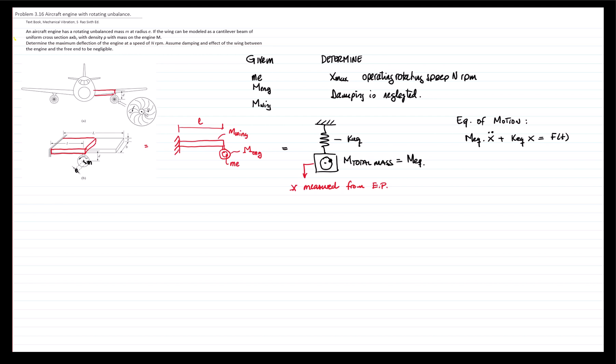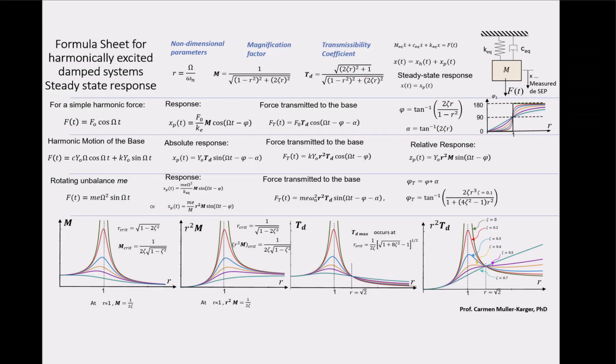When we have an unbalance, the external force becomes ME omega squared sine of omega t. You can recall that from our formula sheet that we studied during the theory. This is the case of harmonic excited damped systems, and this is a steady response that is the particular response for this type of equation. In this case we will neglect the damper. We have the applied force and we have the response of the system. This is the equation that we will use to solve this system.